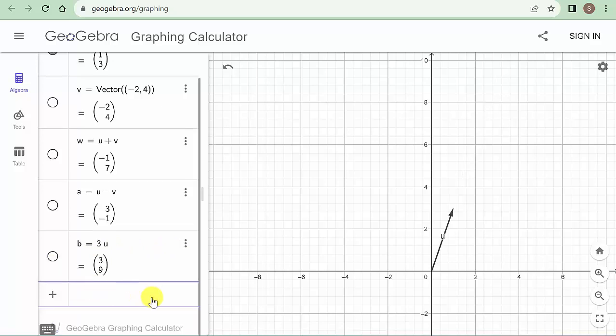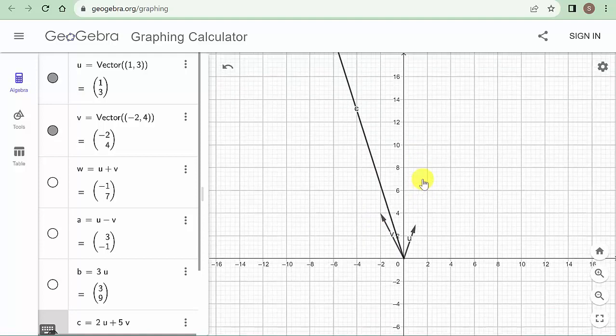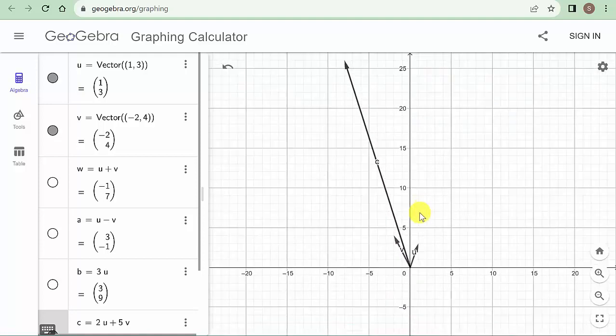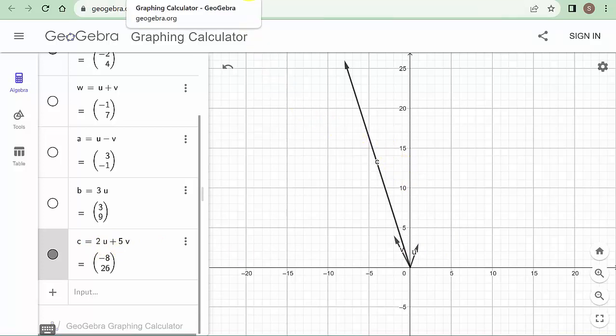Or if you wanted to, you could put 2 times vector u plus 5 times vector v. And hit enter. So here's vector u, here's vector v. And zoom on out here. And this long vector here, that's this vector c, 2u plus 5v. So you can see it's pretty good at giving you a good representation of this.